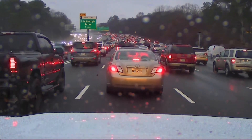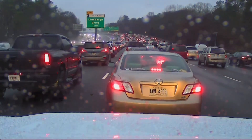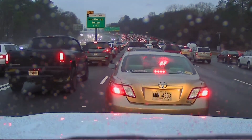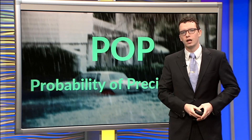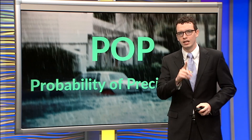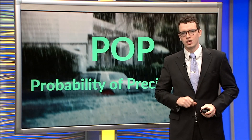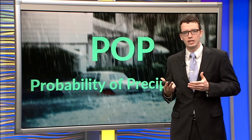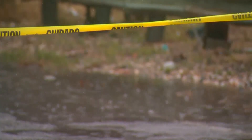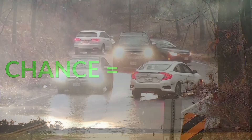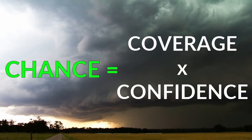Your chance of rain changes if you move from your house to lunch, down to the store, or to the beach. So why show it at all? There is a reason — it allows us to express confidence in our forecast and to include the inherent uncertainty of weather forecasting. Without it, we would only have two options: rain and no rain.